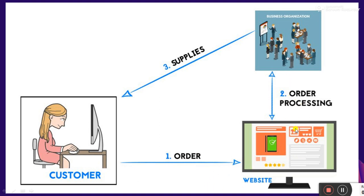The second step is order processing. The business organization gets information from the website — the customer's address, phone, color preference, and so on. After order processing, the business organization accordingly prepares and dispatches the goods and services. This is our B2C model — the most easy and common model of e-commerce.